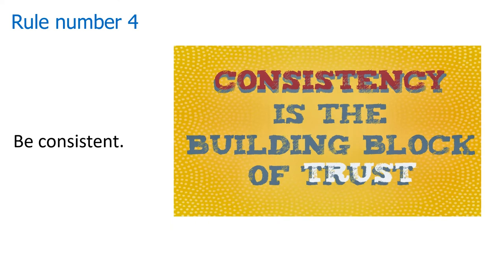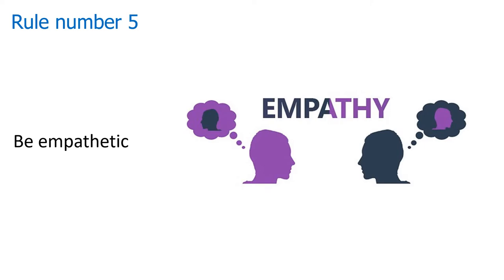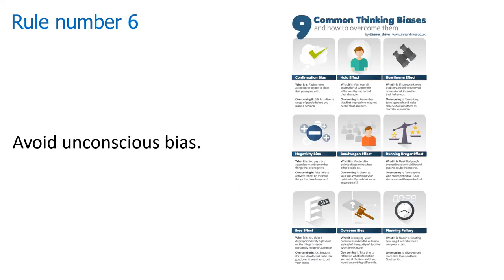Rule number four: be consistent. Rule number five: be empathetic — am I sensitive to the person's particular situation? Rule number six: avoid unconscious bias — have I made assumptions about the student based on race, gender, or socioeconomic background?